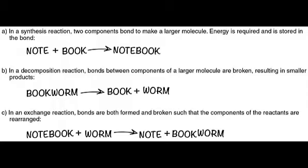In the second example, ammonia is catabolized into its smaller components, and the potential energy that had been stored in its bonds is released. Such reactions are referred to as decomposition reactions. A decomposition reaction is a chemical reaction that breaks down or decomposes something larger into its constituent parts. The general equation for a decomposition reaction is AB → A + B.